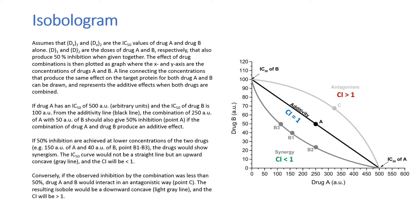If drug A has an IC50 of 500 arbitrary units and the IC50 of drug B is 100 arbitrary units, from the additivity line, the combination of 250 arbitrary units of drug A with 50 arbitrary units of drug B should also give 50% inhibition if the combination produces an additive effect. The combination index will equal 1. If 50% inhibition is achieved at lower concentrations of the two drugs, the drugs would show synergism. The IC50 curve would be an upward concave, and the CI will be less than 1.